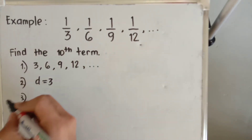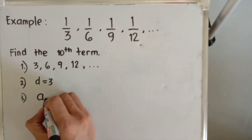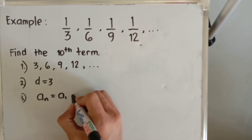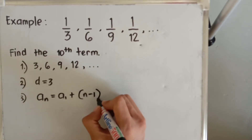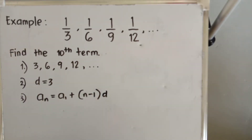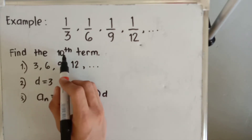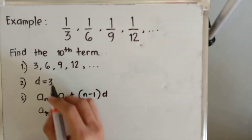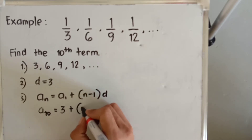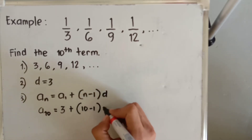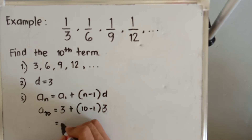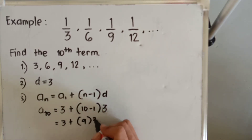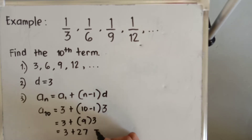Take note that the arithmetic sequence formula is: a sub n is equal to a sub one plus the term position n minus one, multiplied by the common difference d. So we have a sub ten equals three plus nine multiplied by three, which becomes three plus twenty-seven, and this is equal to thirty.